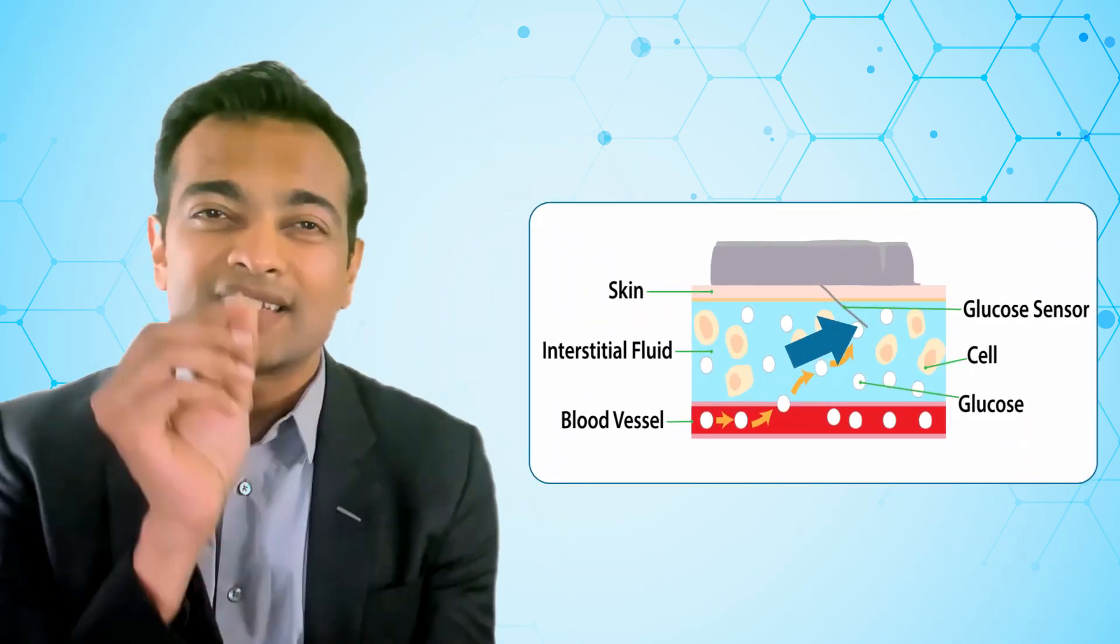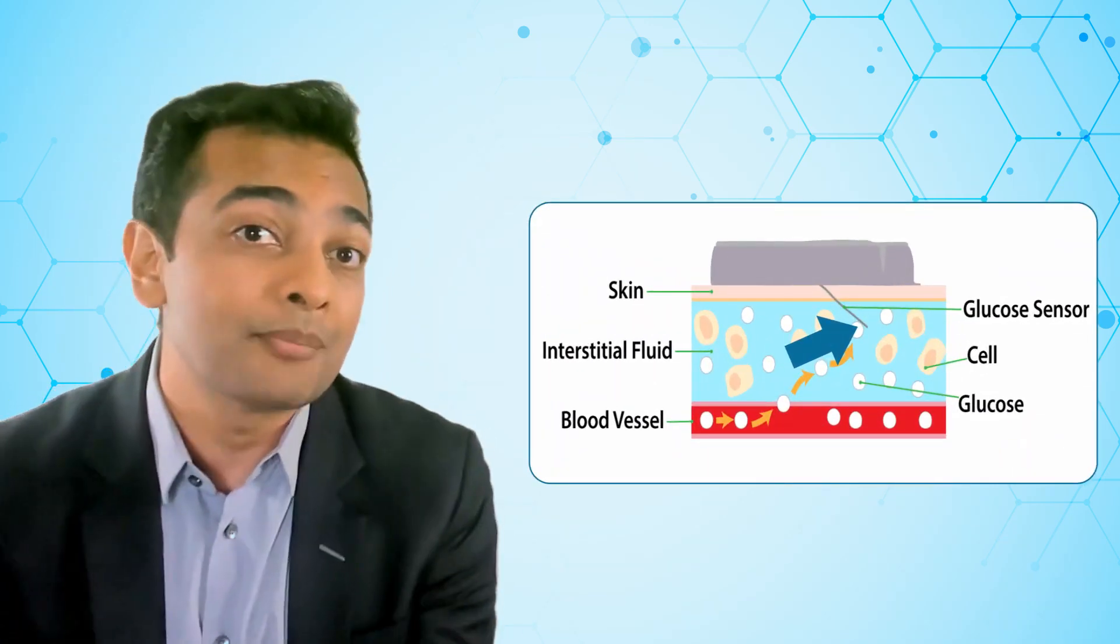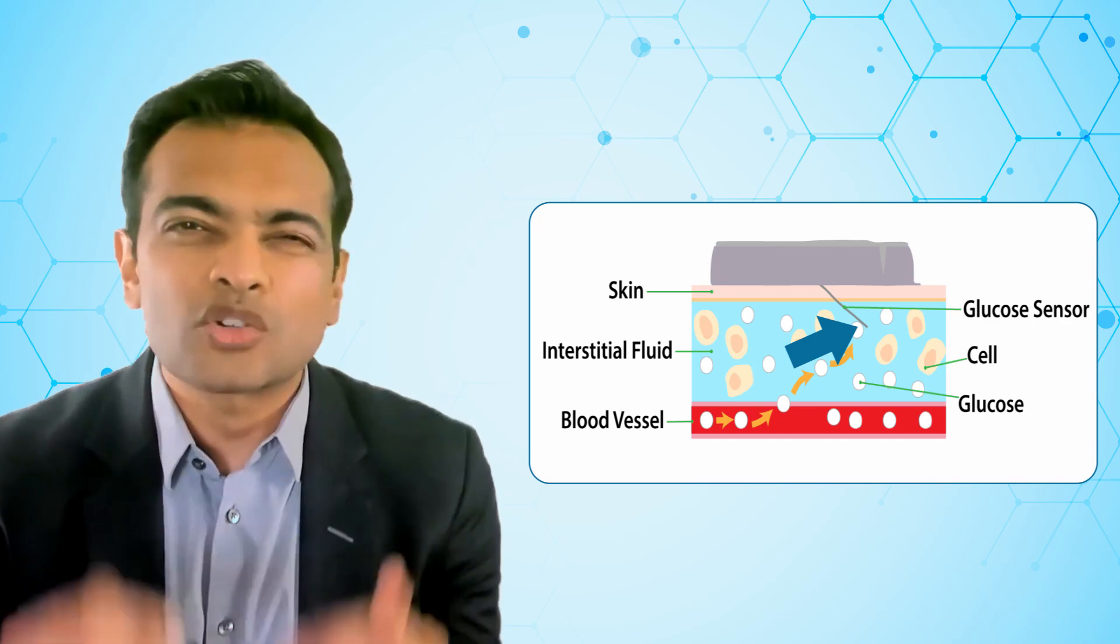This is where the finger stick glucose monitoring device is of very little use as the trend of glucose is unknown. Enter the CGM. This device will sit on the skin and has a tiny filament the size of a couple of human hairs that projects right under the skin.